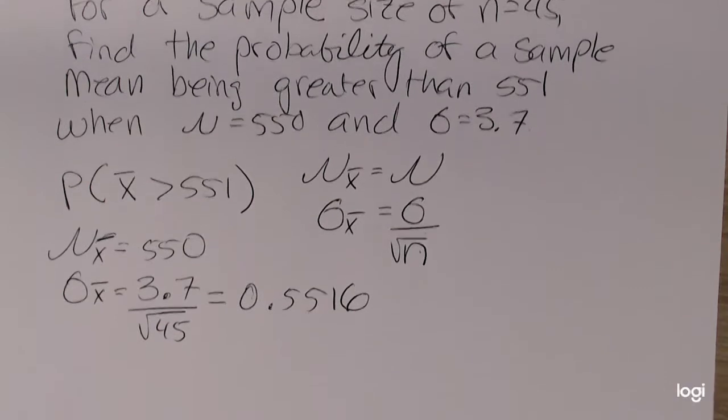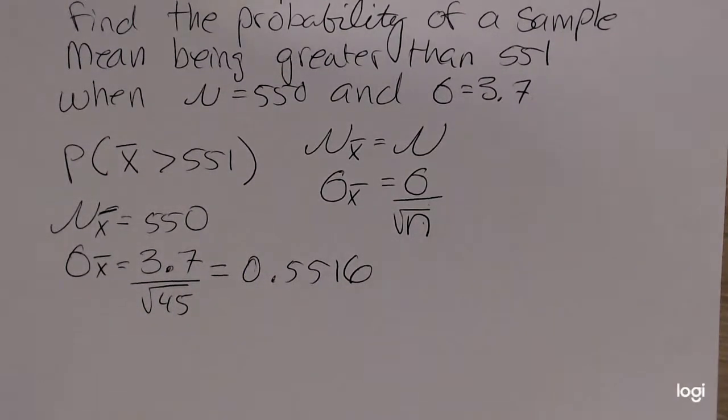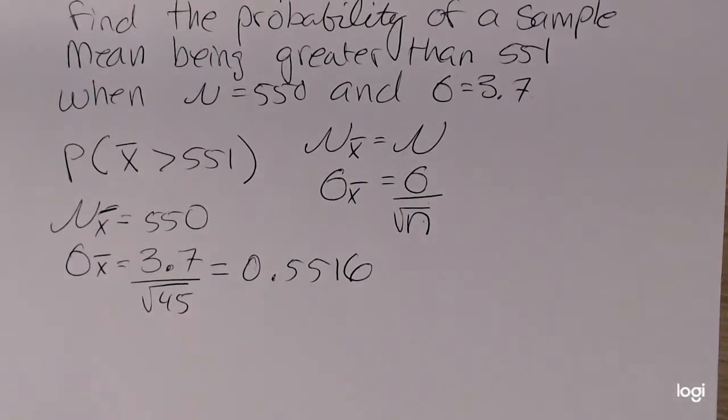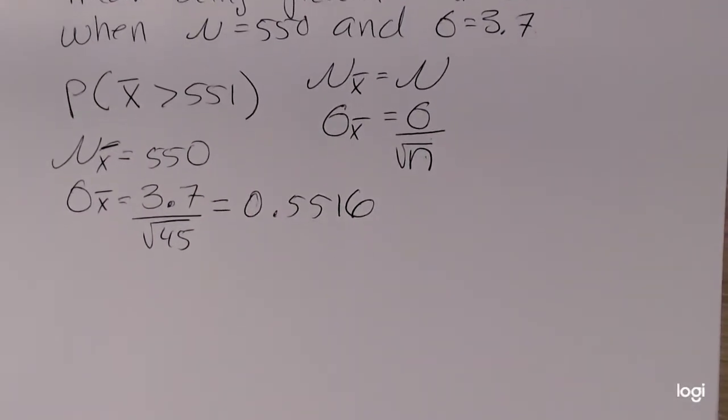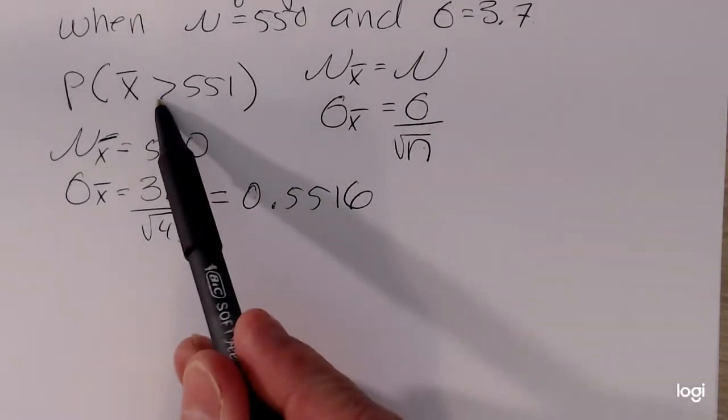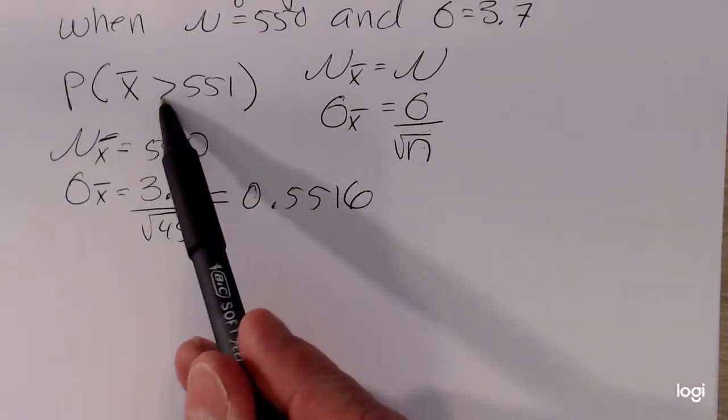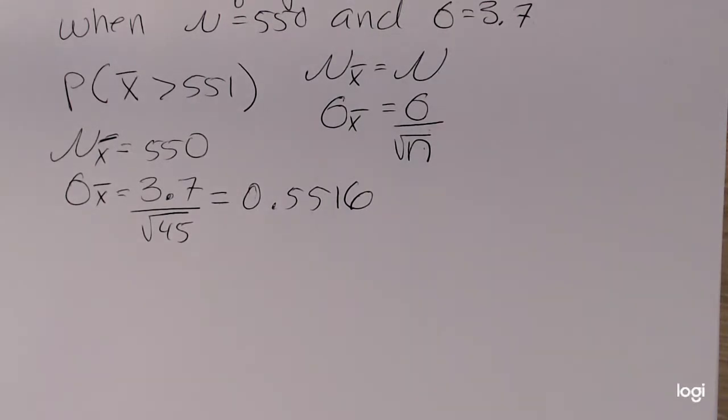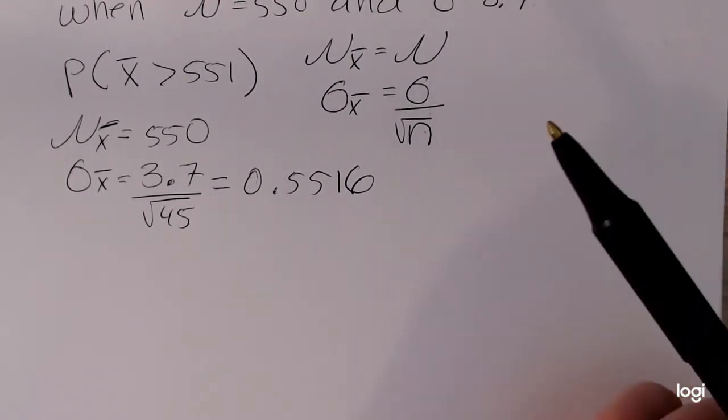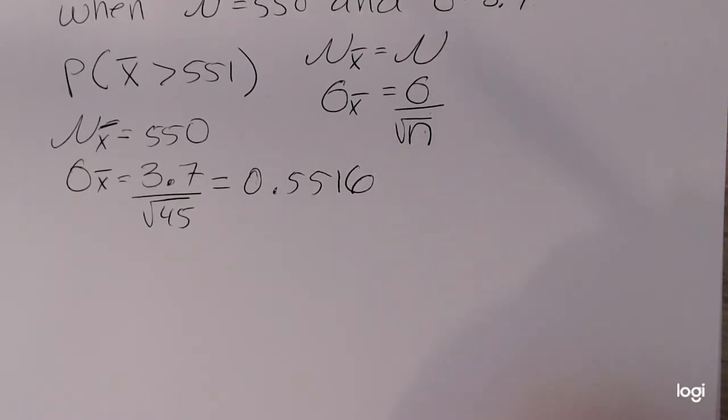I'm going to end up using the TI-84 to do this because I think it's very convenient to use technology. But you definitely want to pay attention to the direction being asked in the probability. And also, you want to pay attention to the wording of the problem. Are you being asked about an individual x value or are you being asked a question about a sample mean?